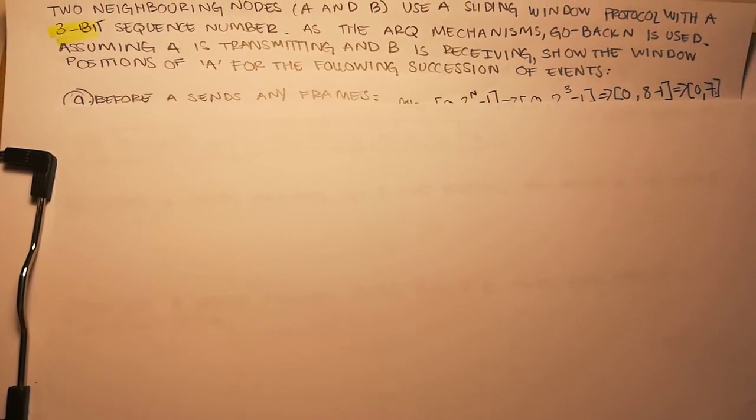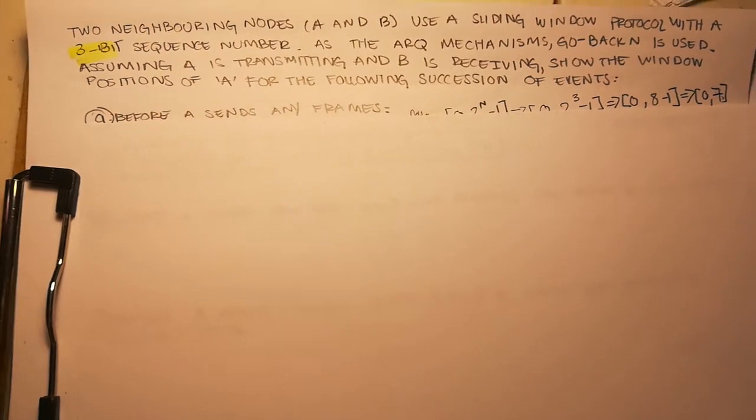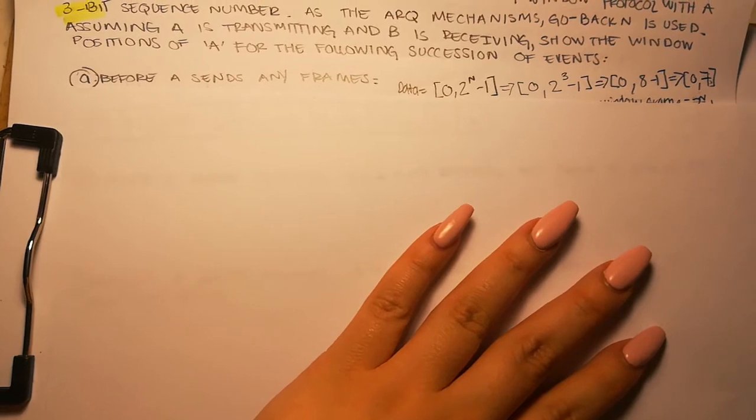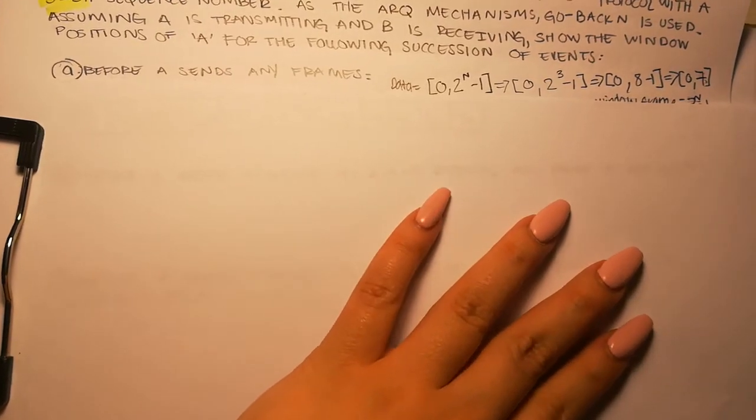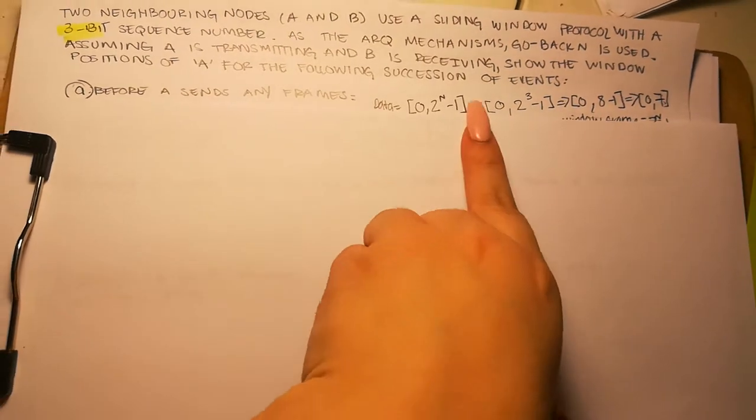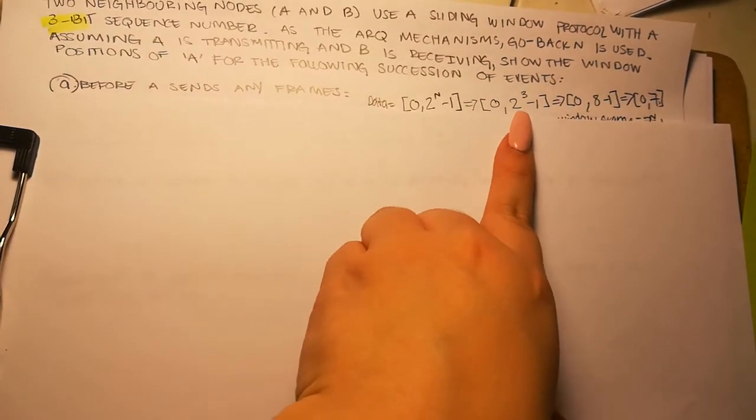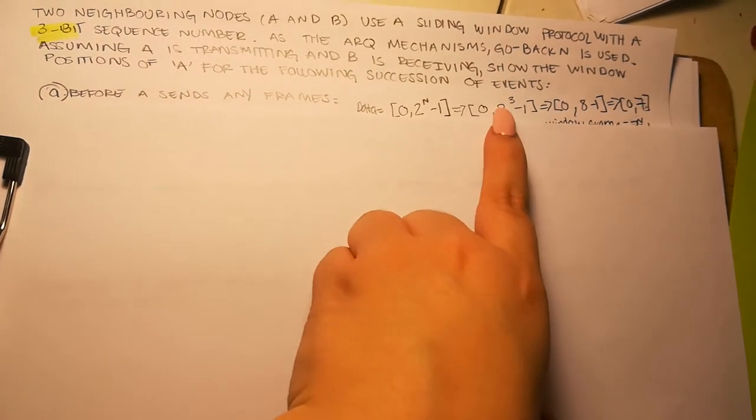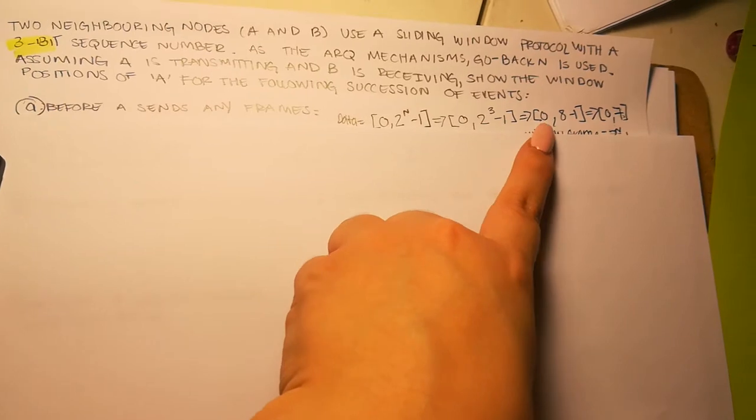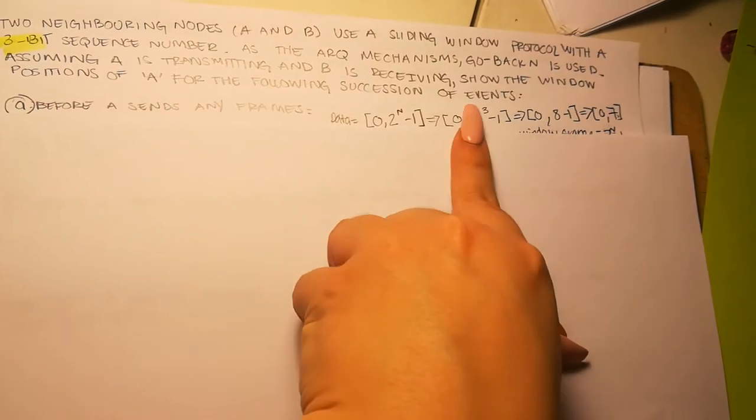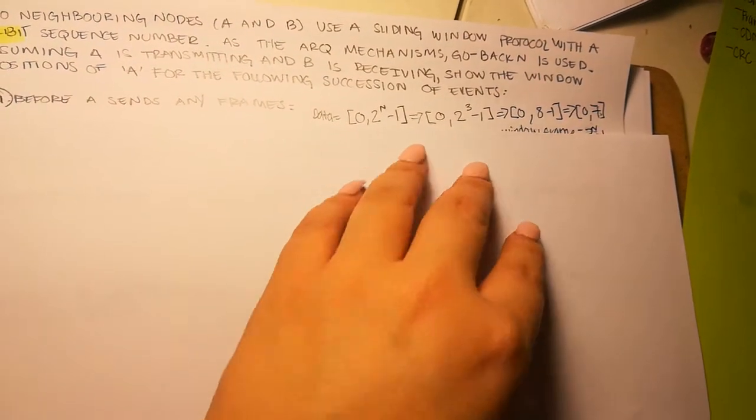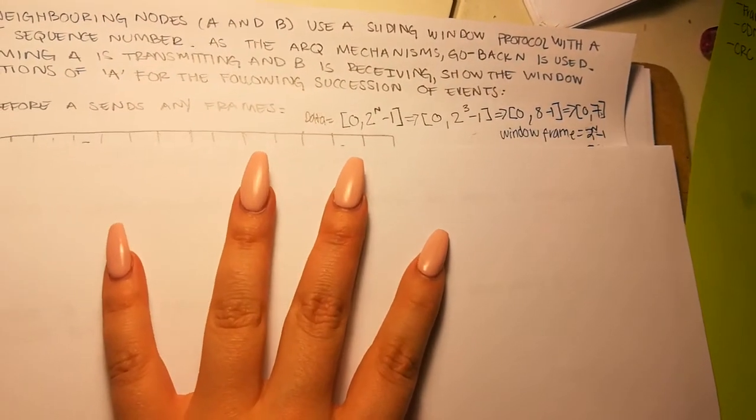So here they're asking us for the sender's window. We don't care about the receiving end. First, we need to find out the amount of data that is transmitting. I'm sending data from zero to 2^n minus 1, which is zero to 2^3 minus 1. Zero to 2^3 is 8, minus 1 will be zero to seven.